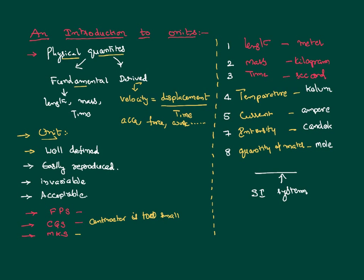The SI system also includes supplementary units like angle and solid angle. Angle is measured with a unit called radian, and solid angle is measured with a unit called steradian. Taking all these into consideration, the Standard International system that we follow right now is defined. All these units are the fundamental units used to measure the fundamental quantities. Thank you, I will be seeing you in one more video lecture.